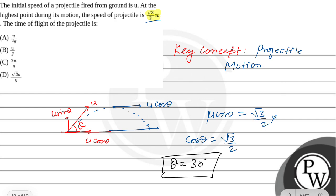We know time of flight T = 2u sin θ / g. We know theta, so we can easily find time of flight. That is T = 2 × u × sin θ / g. We have theta = 30°, so sin 30°